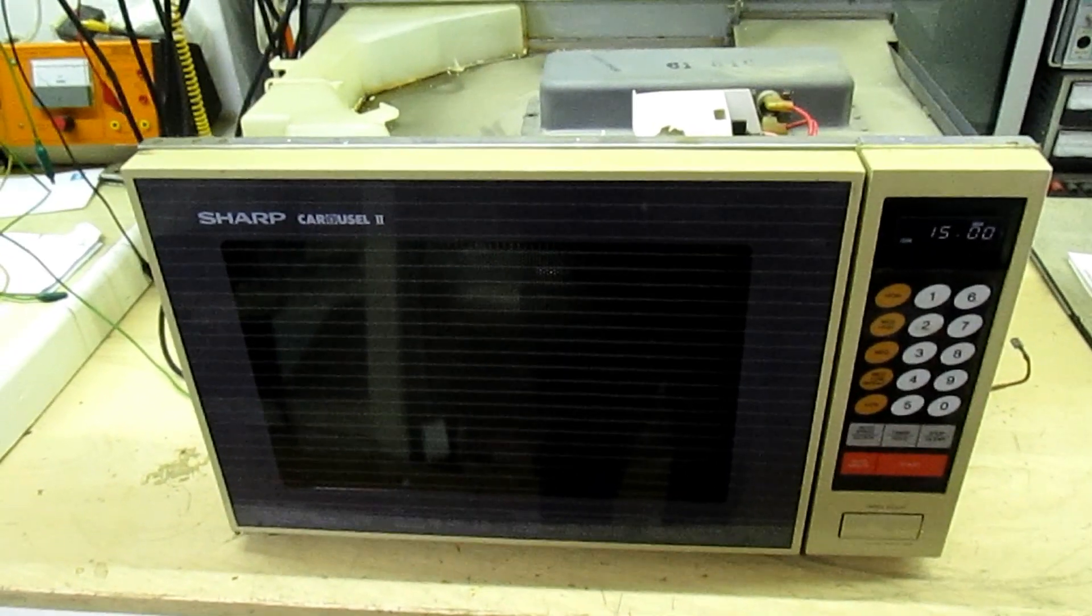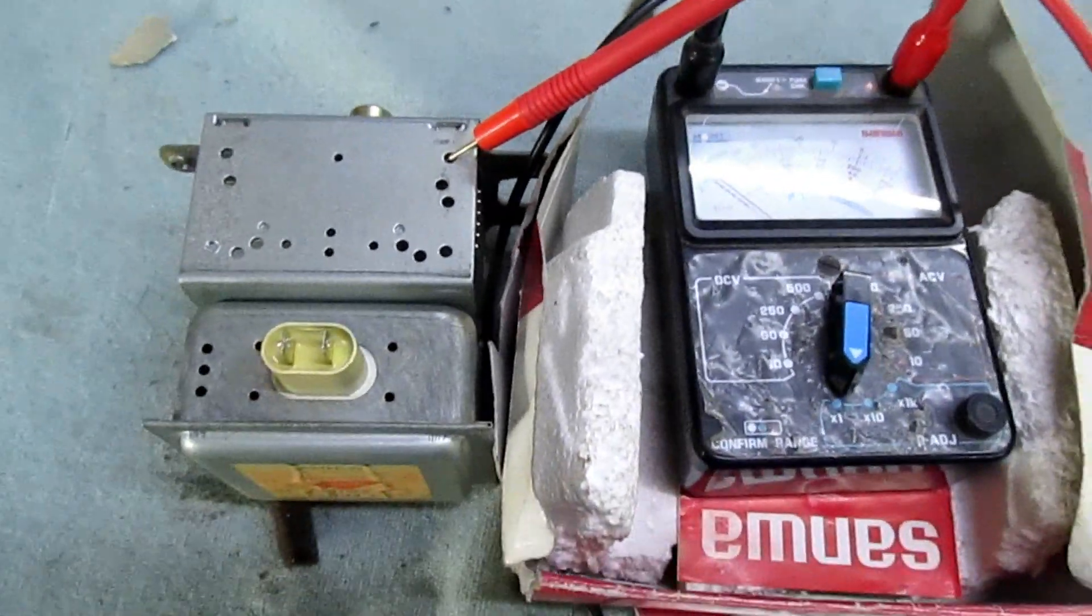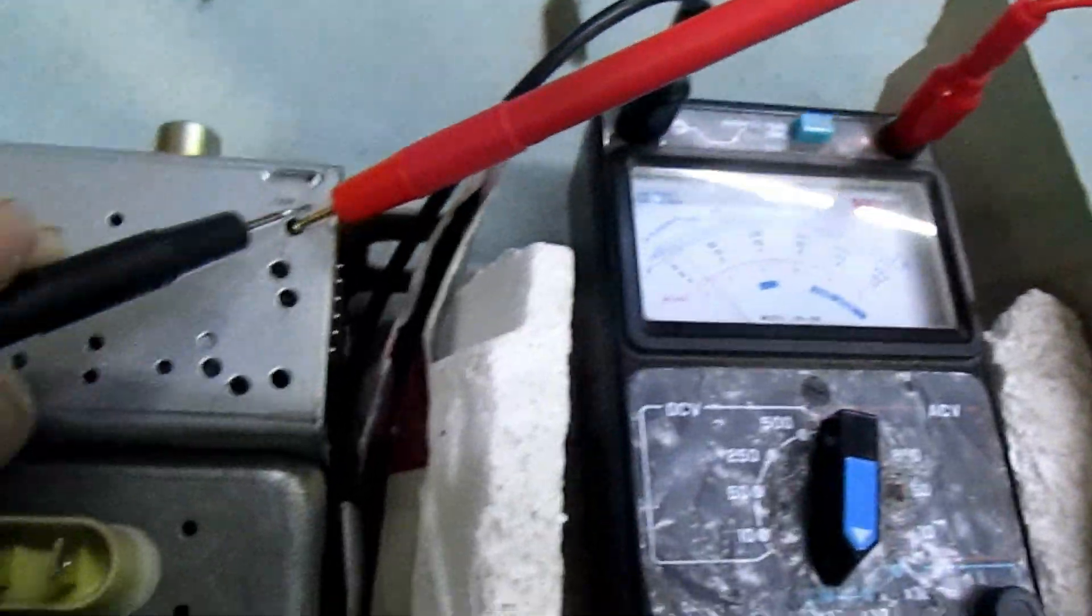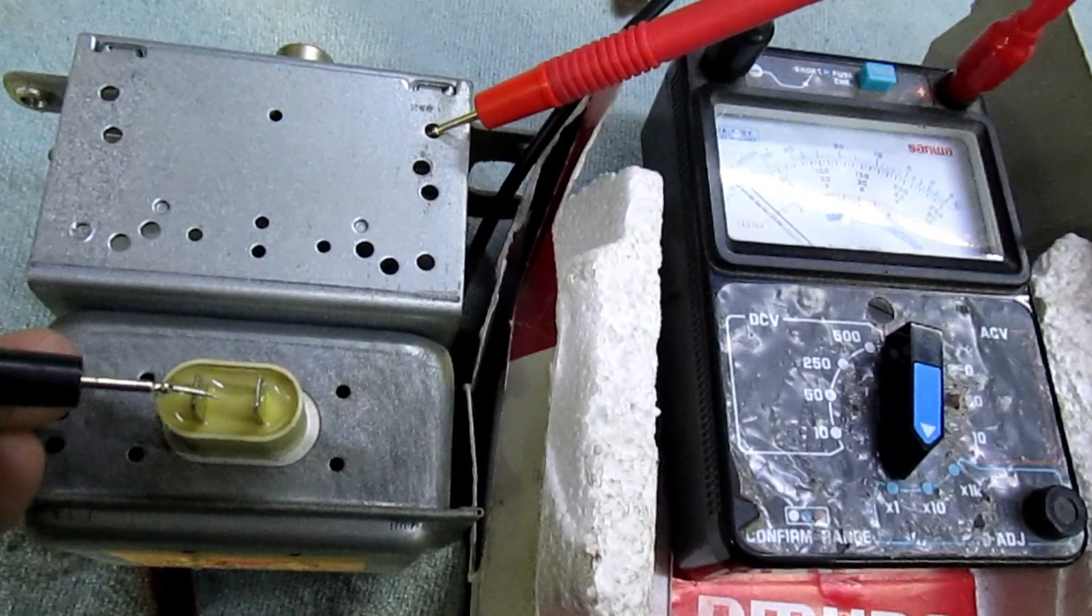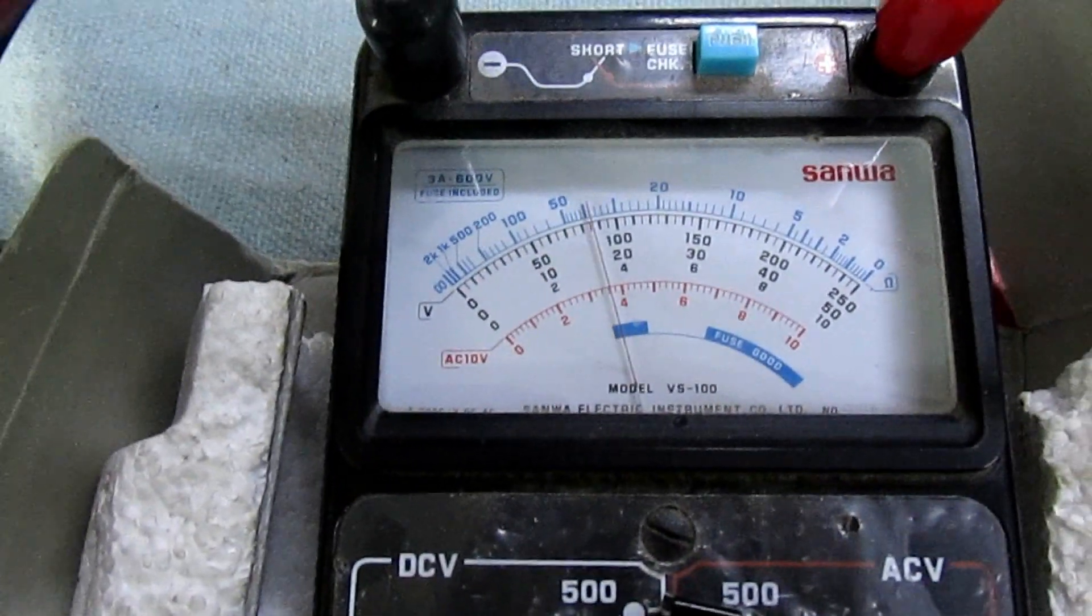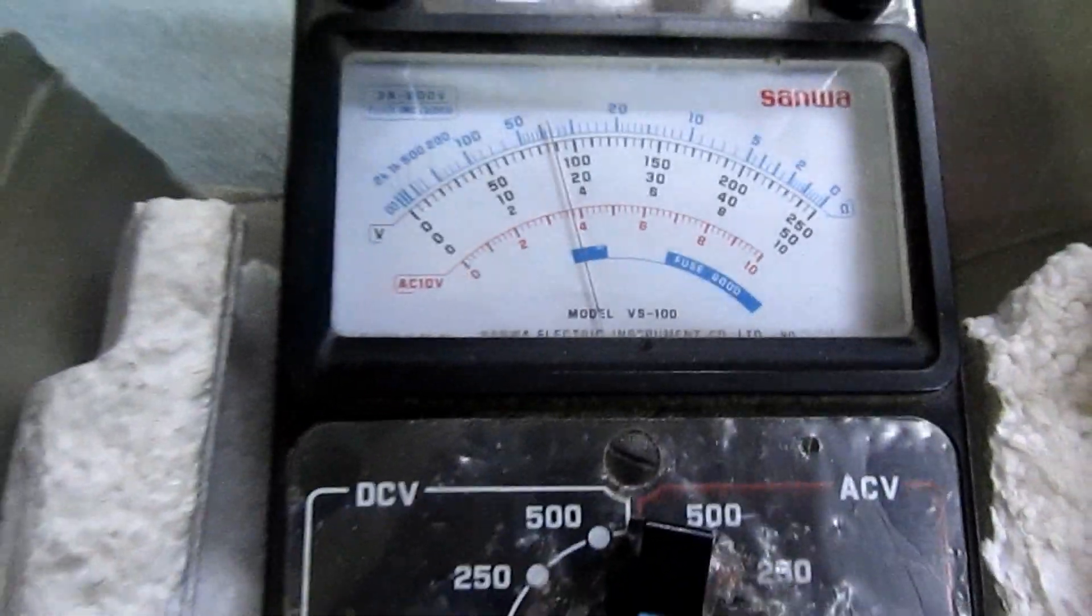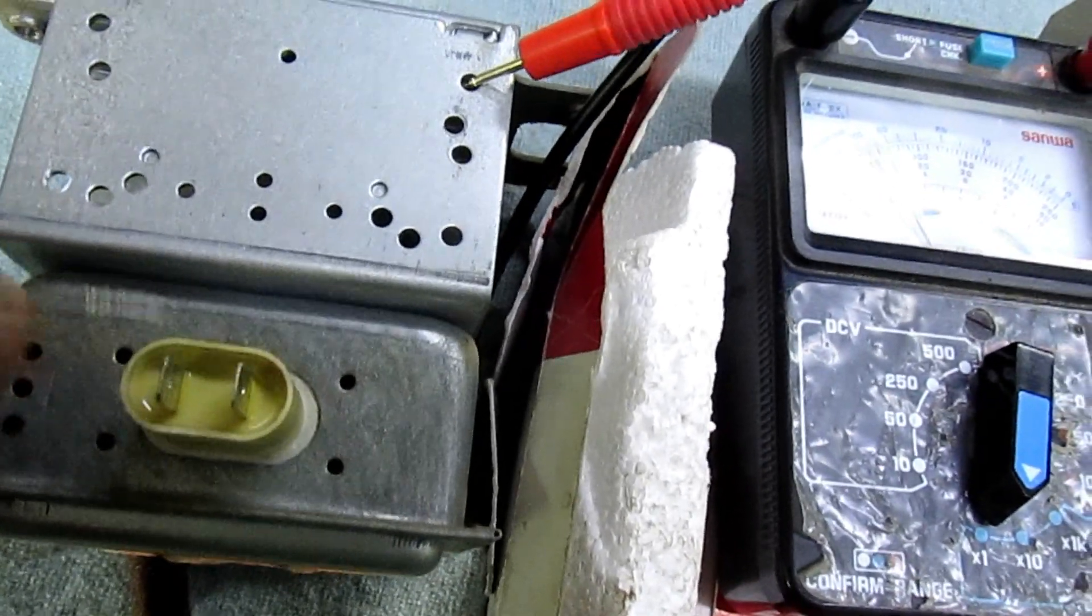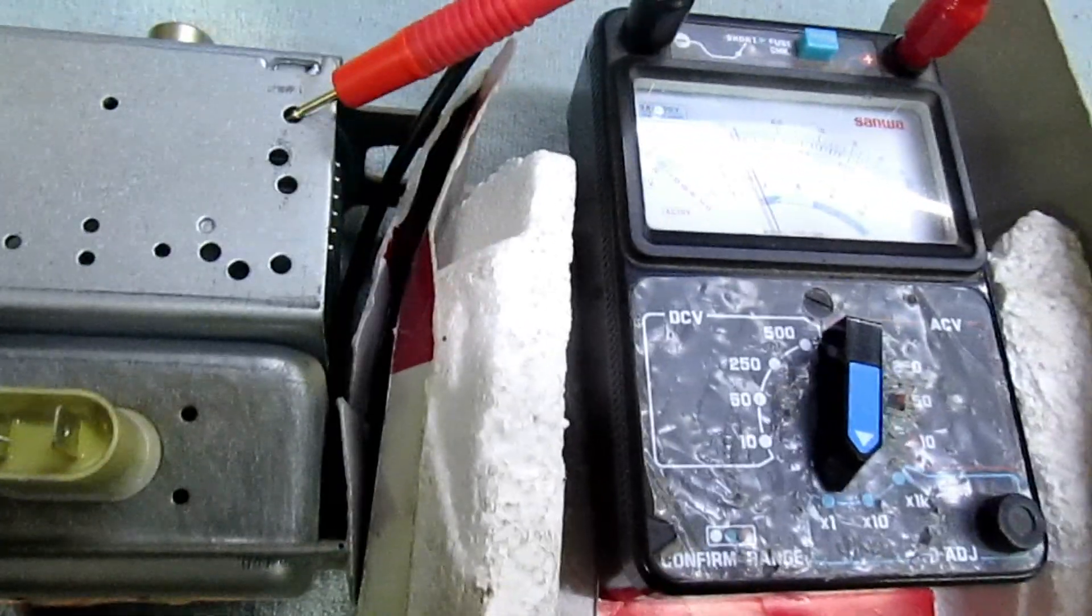Right, so here we've got the magnetron out. Now one of the tests you want to do is take your meter, put a wire on the earth, and then the other wire from your meter - touch it here on the filament terminal. See what happens. If you can see on the meter there, we've got a reading of about 40 ohms. Now that indicates that the filament terminal here is faulty. We've got a 40 ohm leak between the body and the filament terminal itself.